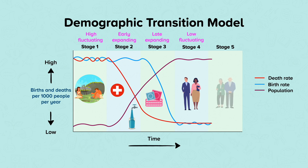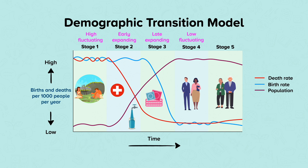Stage five is being experienced by a small number of developed countries including Japan and Germany. They have a relatively old population due to the excellent health care and high life expectancy, and death rates may therefore naturally start to rise. Birth rates fall below death rates because it is the norm for both parents in a family to work and families are usually kept small. This enables families to invest in their children and provide them with good opportunities. As a result of these changes, stage five is described as the stage of natural decrease.